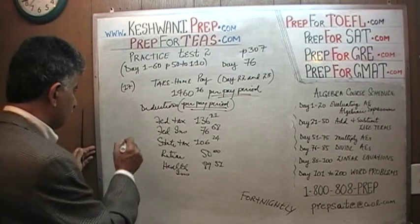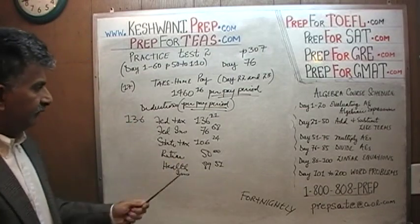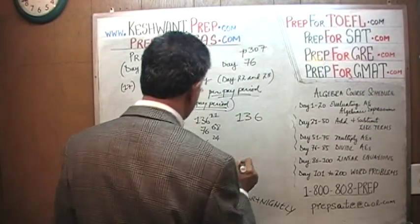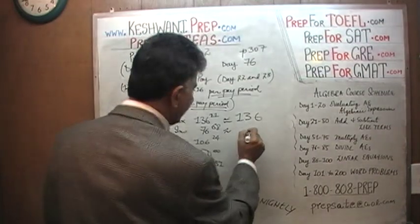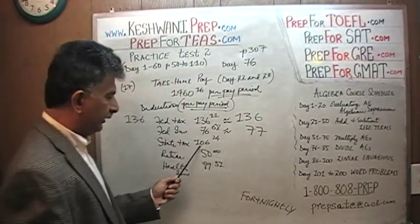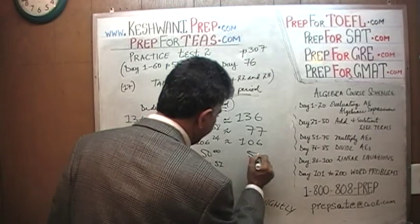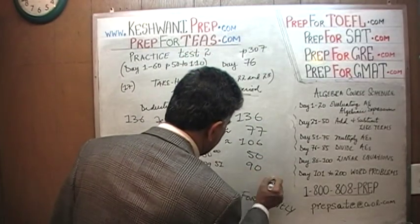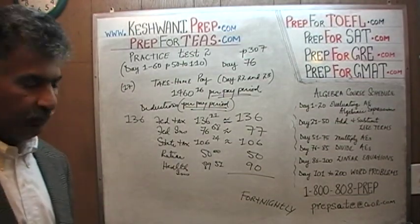$136.21 we round to $136. $76.68 we round to $77. $106.24 we round to $106. $50.00 stays as $50. And $89.51 we round up to $90, because 51 cents is more than 50.